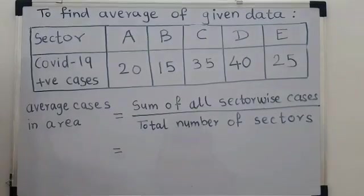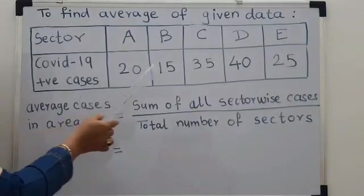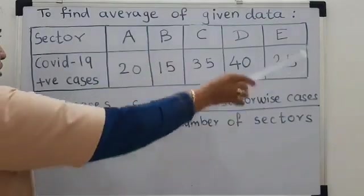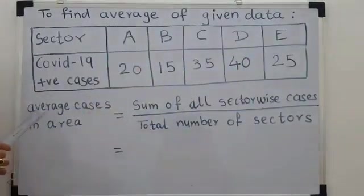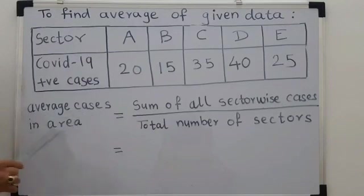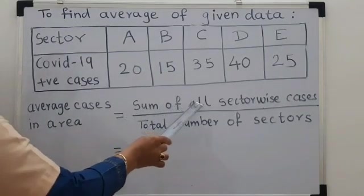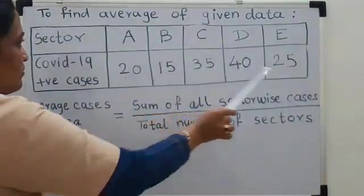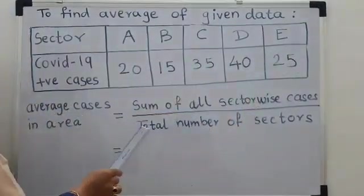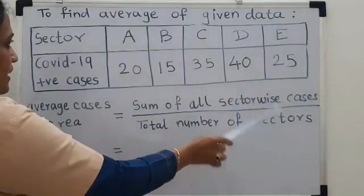Now, the question is that we have to find out average of all the cases in that particular area. Here is a formula to find average. Average cases in that area is equal to sum of all sector wise cases. Means, these numbers we have to add.